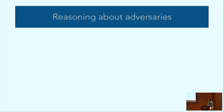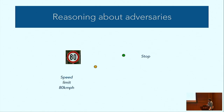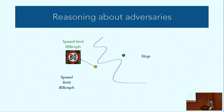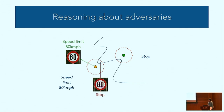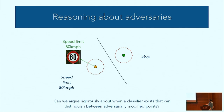Since this work is about adversarial examples, let me give brief definitions. Consider a simple classification problem with two classes — a speed limit class and a stop sign class. You derive a classifier that classifies correctly, but if you consider bounded adversaries, adversarial examples appear at points where the adversarial ball intersects the decision boundary. By replacing the classifier with a straight line, that adversarial example disappears. The question is: when can we argue rigorously about when a classifier exists that can distinguish adversarially modified points?